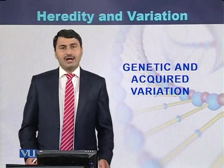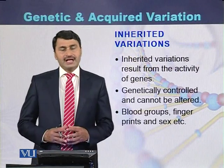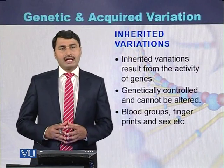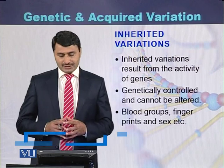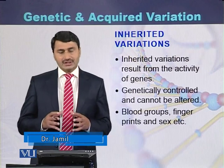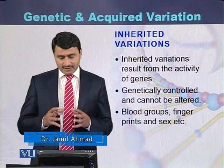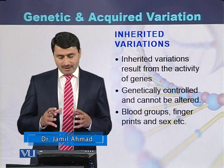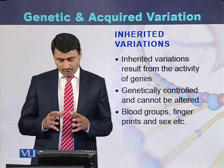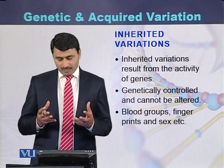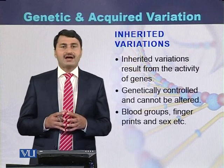Genetic and acquired variations. Genetic variations are also called inherited variations. Inherited variations result from the activity of the genes. These variations are genetically controlled, like the blood group of humans, our fingerprints, and our sex.